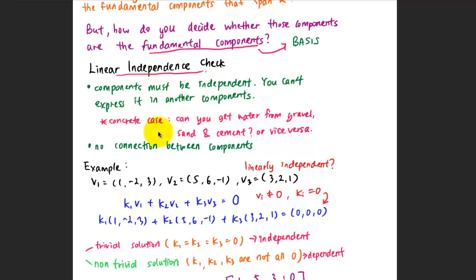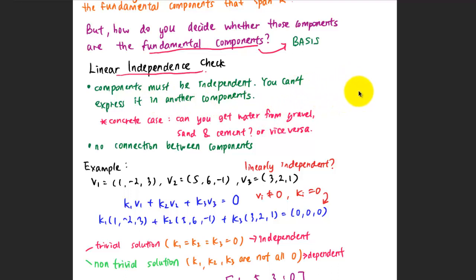Think about a concrete case: can you get water from combinations of gravel, sand, and cement, or vice versa — any one of these components from combinations of the other three? You can't, which means the components are independent. You can't express water equals gravel plus sand plus cement — there is no connection between the components.